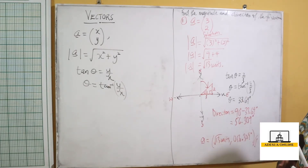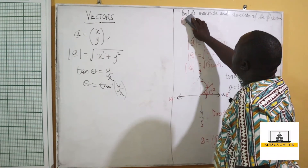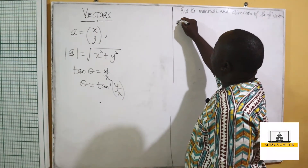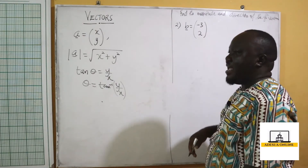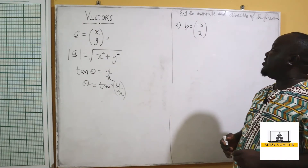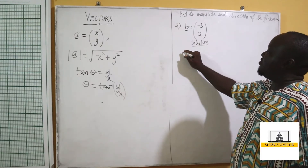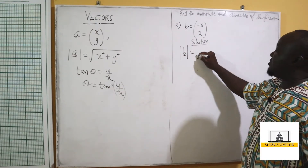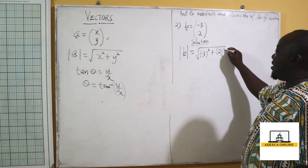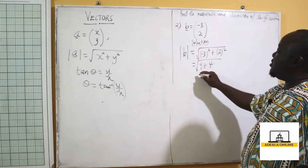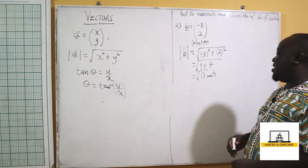Now let's pick another example. Assuming I have been given another vector — a vector b equal to negative 3, positive 2 — and I have been asked to find the magnitude and direction of this vector. So in my solution, I first start by finding the magnitude of b. The magnitude of b is equal to the square root of negative 3 all squared plus 2 squared, which gives me square root of 9 plus 4, which is the square root of 13 units.